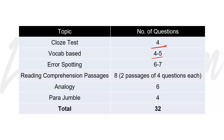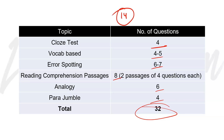Verbal session की बात करें तो: cloze test simple 4, gap-based 4-5, para jumbles 6-7, reading comprehension 8, analogy 6, jumbled sentences 4, and total data 32.